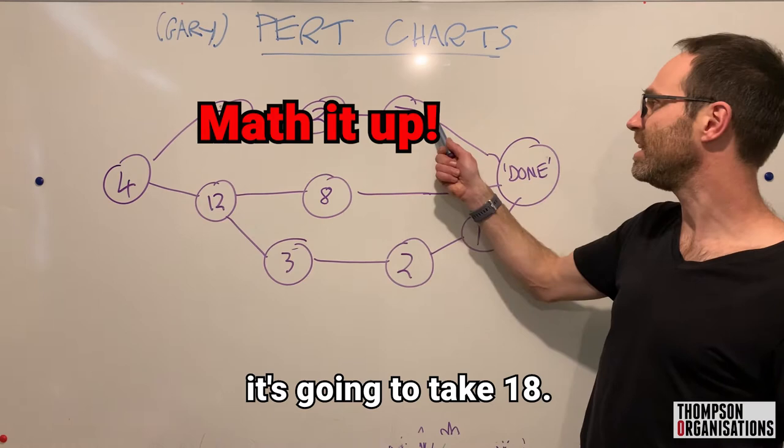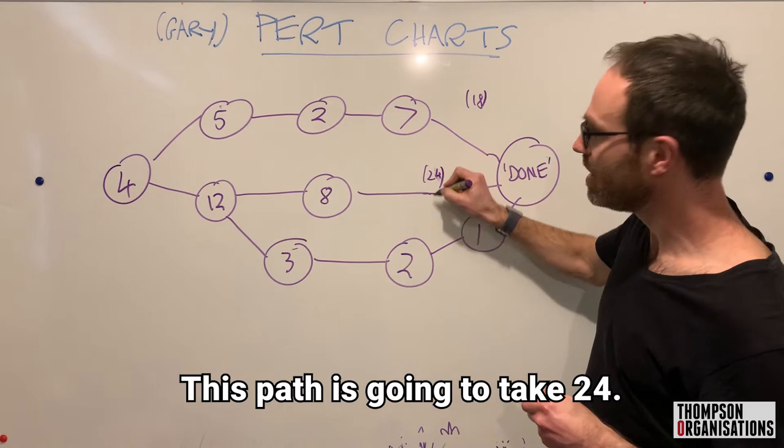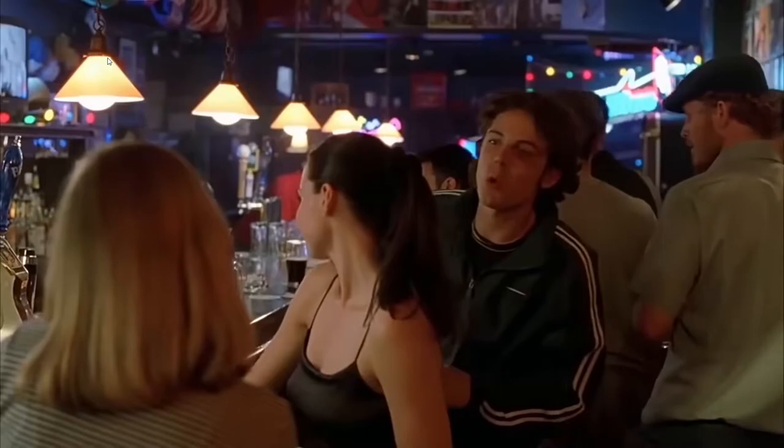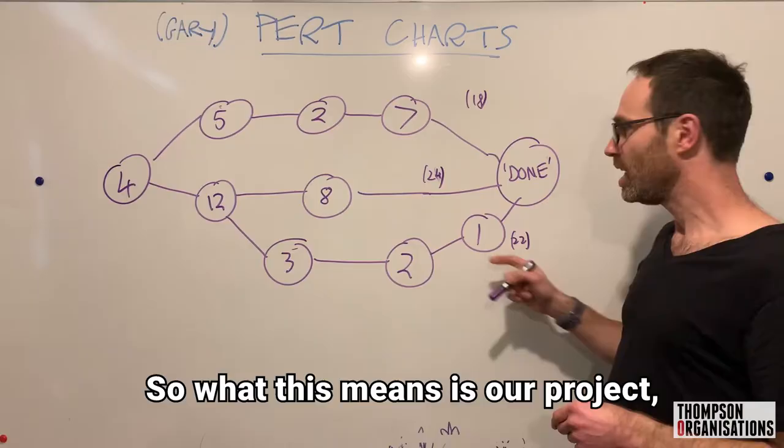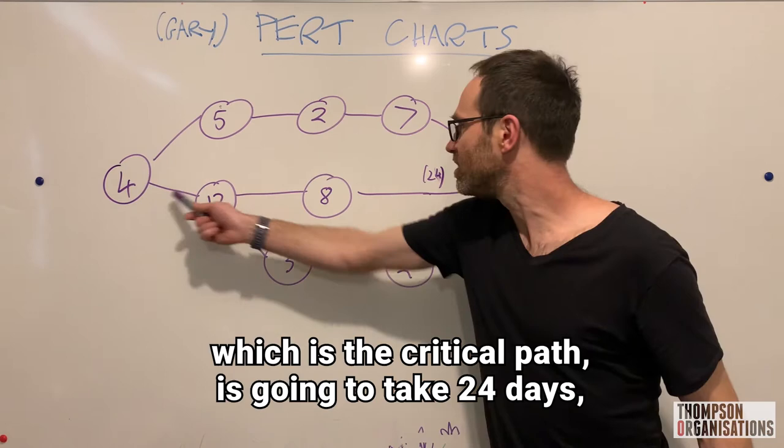This path is going to take 24. And this path along the bottom is going to take 22. So what this means is our project, which is the critical path, is going to take 24 days, but that's the longest path. 4 plus 12 plus 8 gives us 24 till done.